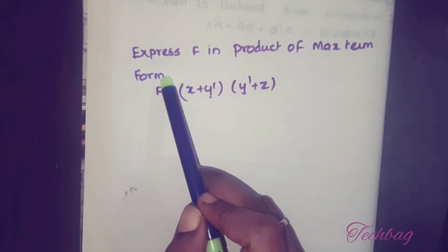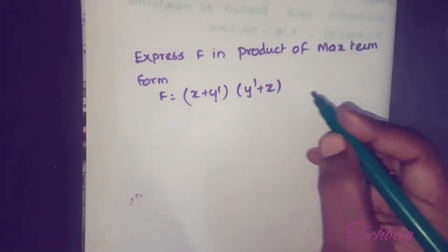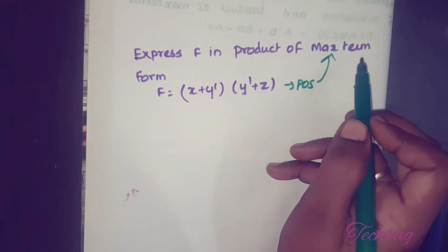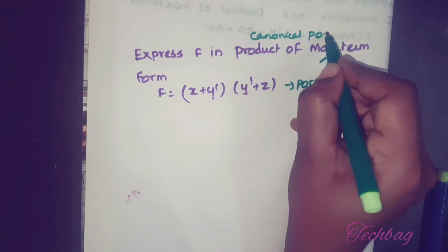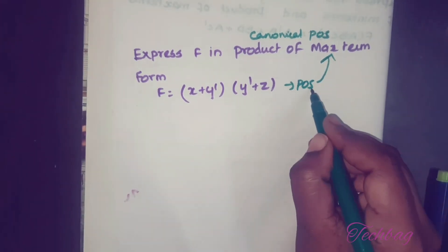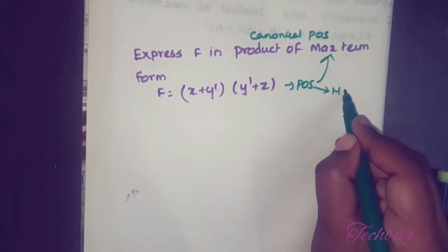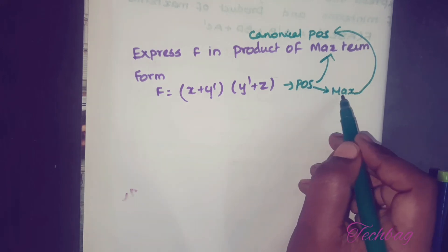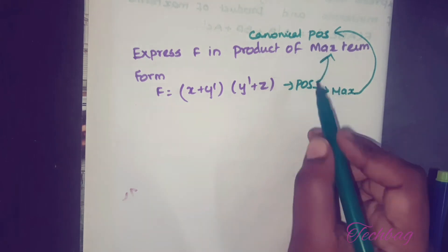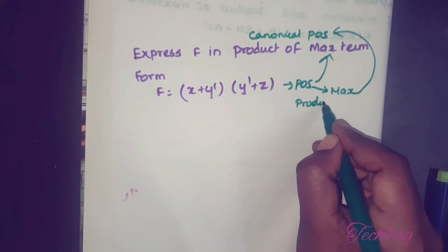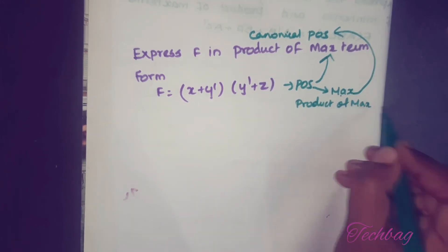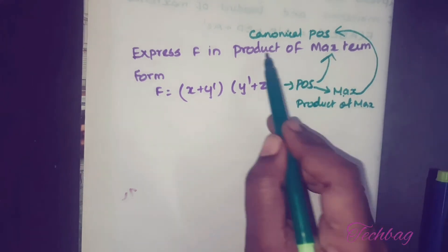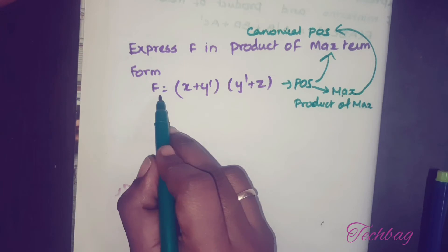Express f in Product of Maxterm form. Here f is in a Product of Sum expression, and you have to convert this Product of Sum expression into Product of Maxterm. Product of Maxterm is nothing but canonical Product of Sum, because if you convert all the sum terms into max terms, it becomes canonical Product of Sum. If all the sum terms are max terms, it is called canonical Product of Sum, and you can also call it Product of Maxterm. So Product of Maxterm is equal to canonical POS form — it is a different name for canonical POS form.